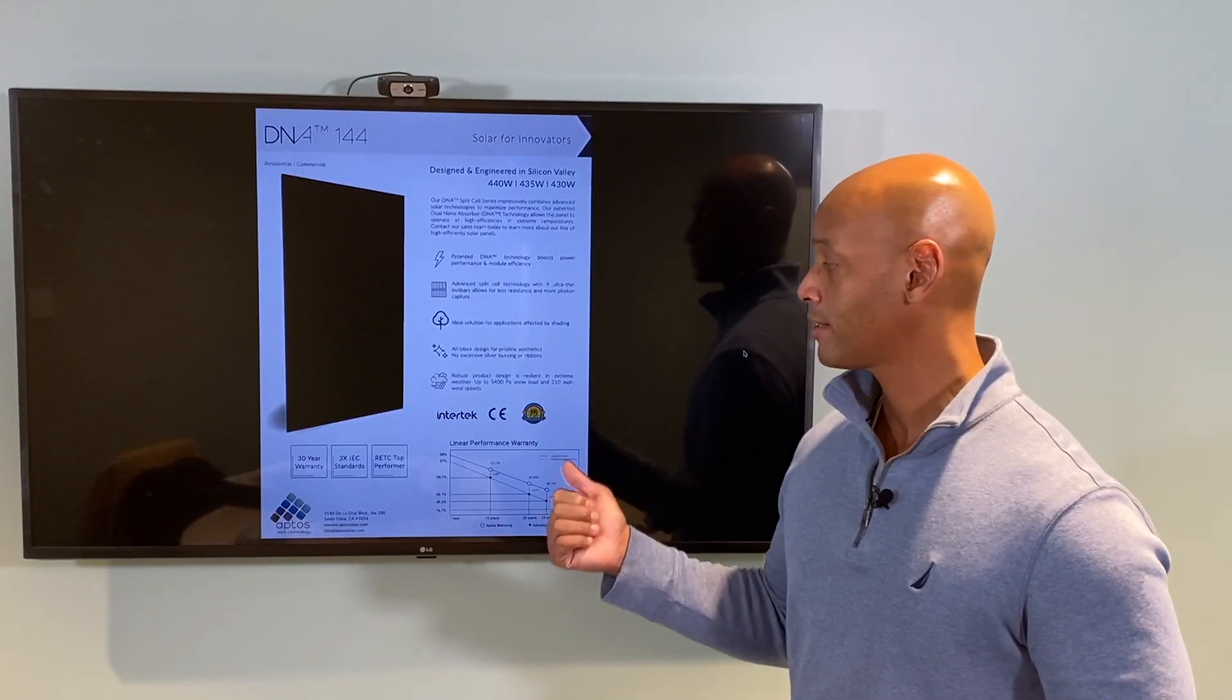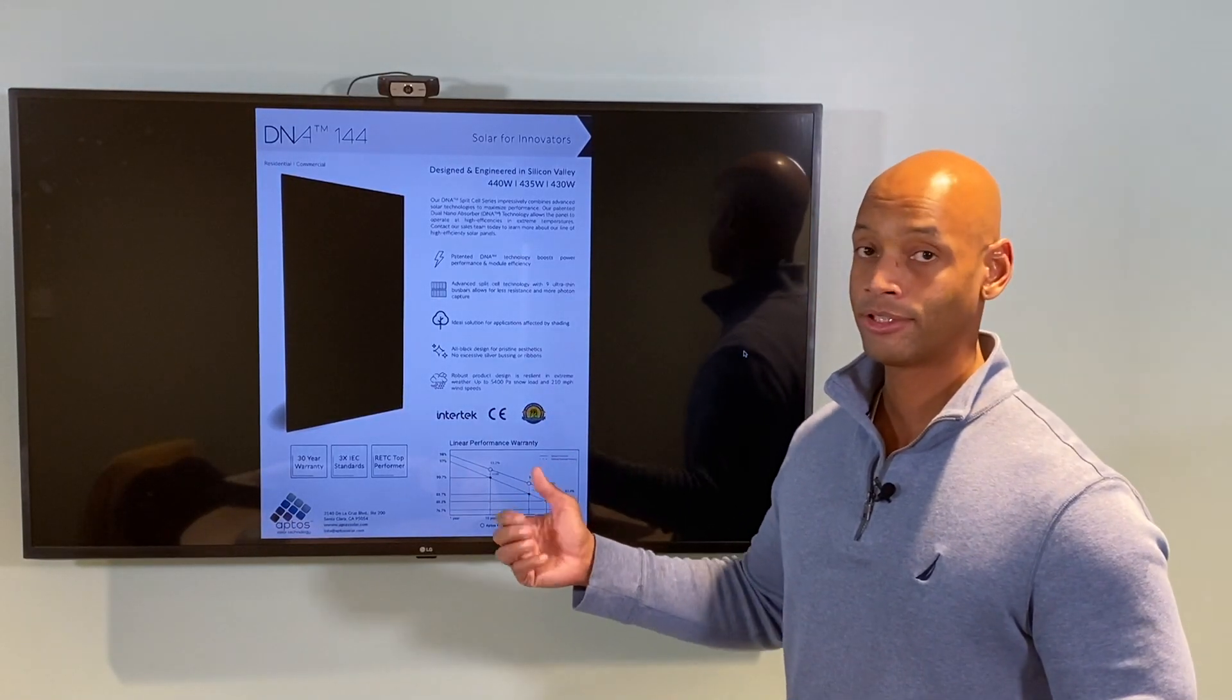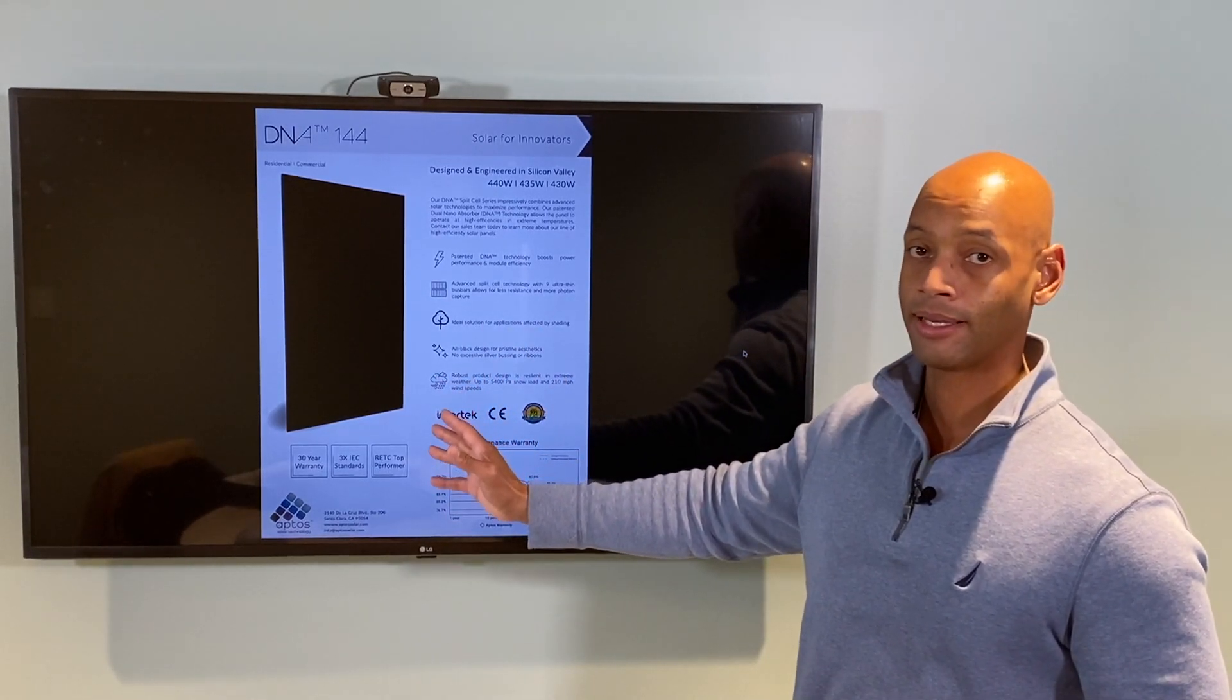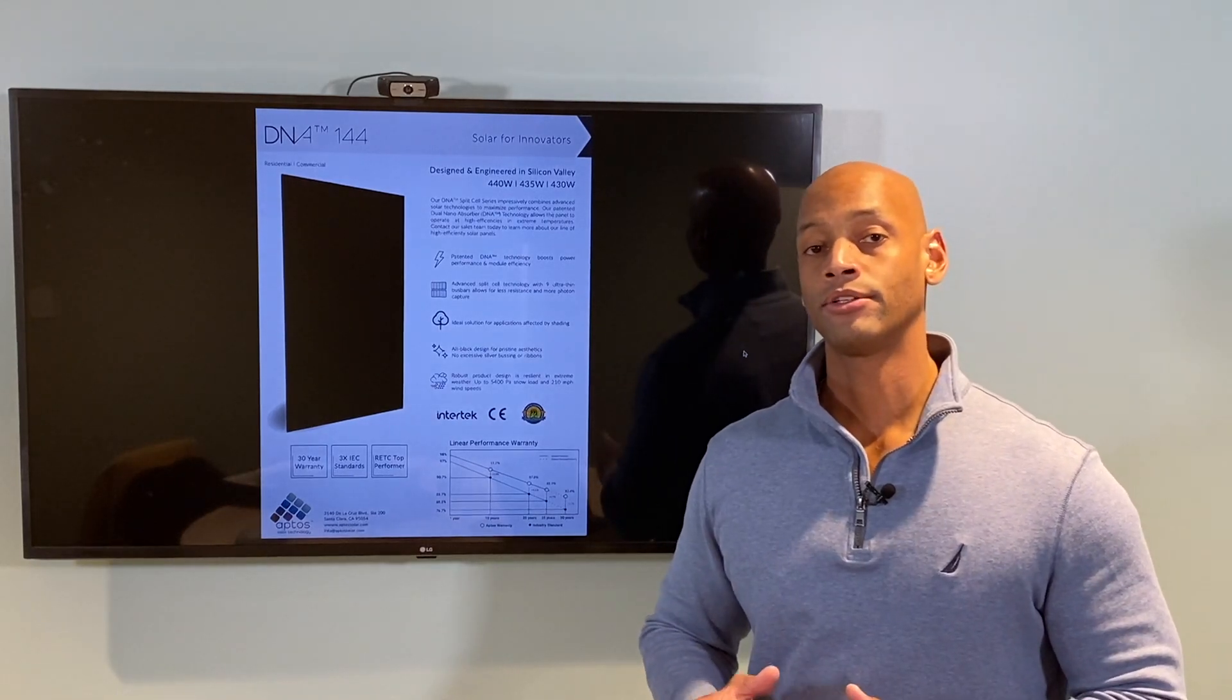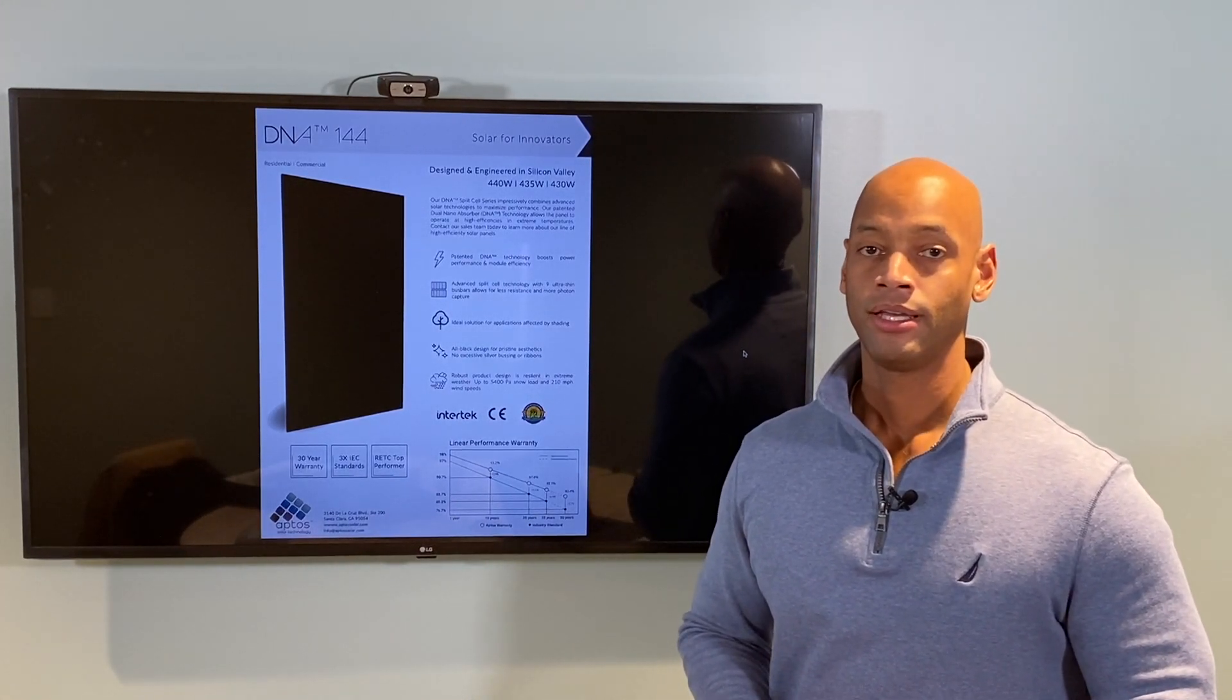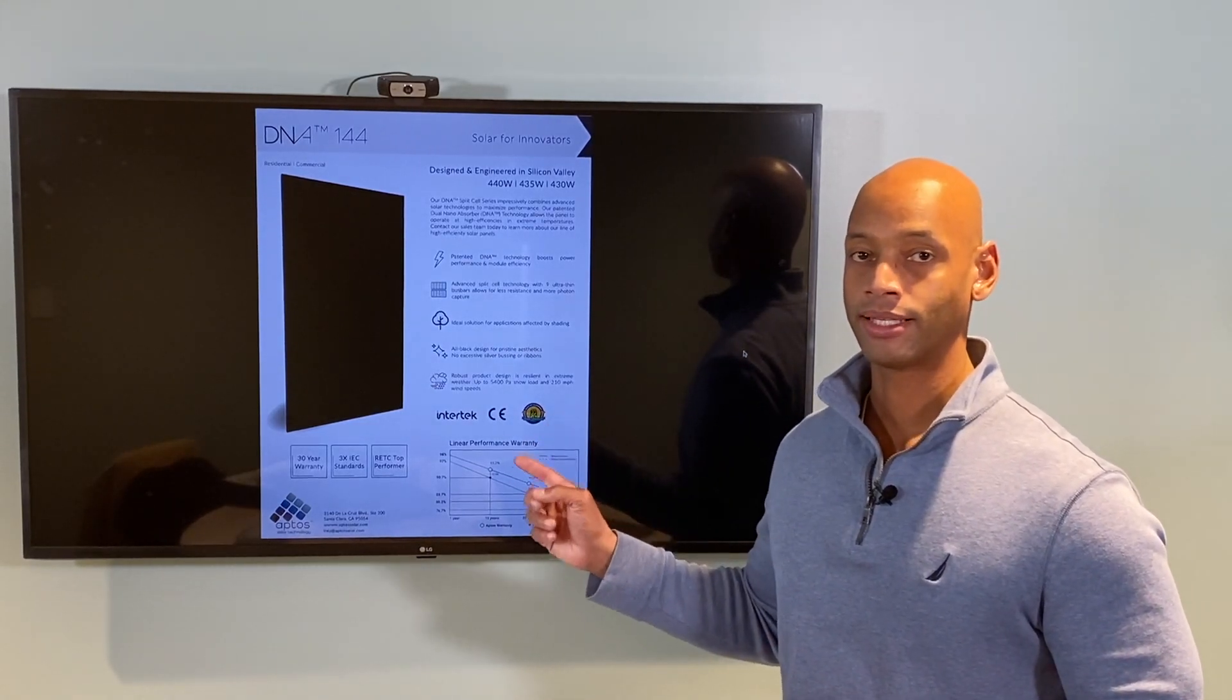For those of you watching from Texas and other places prone to hailstorms, the Aptos 440 is a great product not only in terms of aesthetics - it's a very nice black-on-black design - but for those that want a solar module that can withstand extreme weather conditions, this is definitely something you're going to want to take a look at.